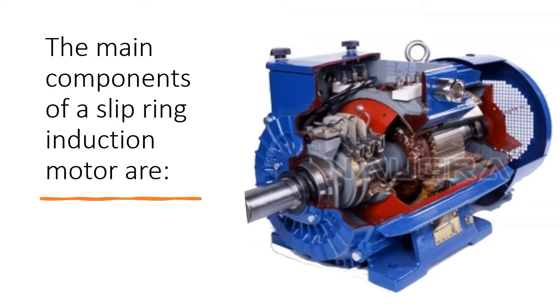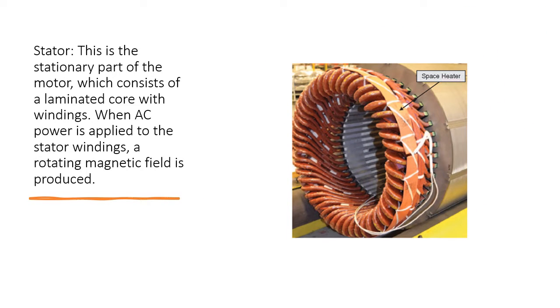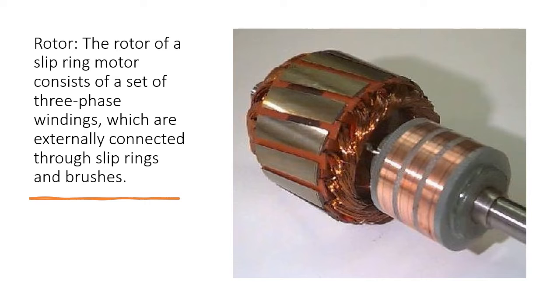The main components of a slip ring induction motor are: Stator - This is the stationary part of the motor, which consists of a laminated core with windings. When AC power is applied to the stator windings, a rotating magnetic field is produced.